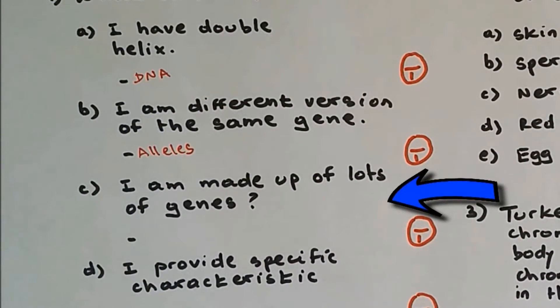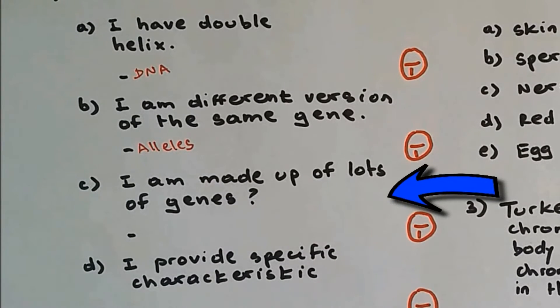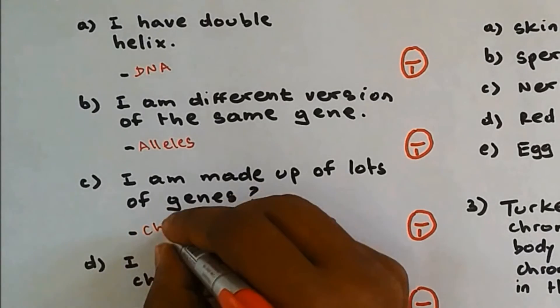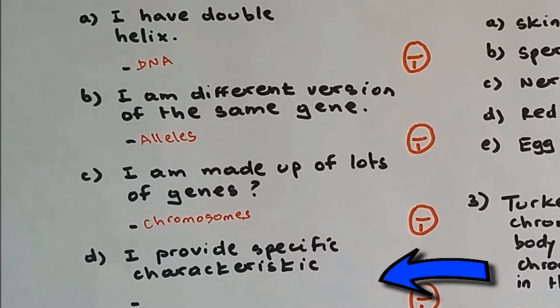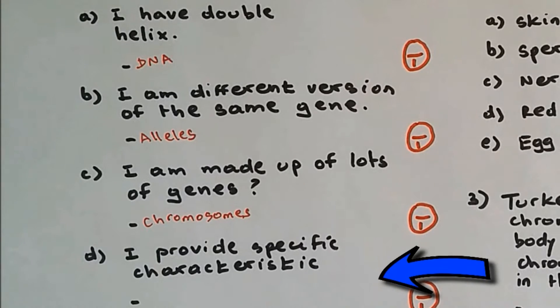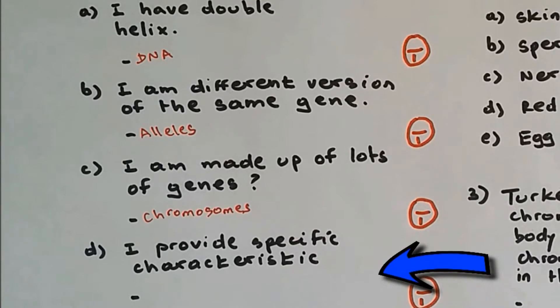Part C: I am made up of lots of genes. A group of genes make up a chromosome, so the answer for part C is chromosome. Question D: I provide specific characteristics. The parts which provide specific characteristics on chromosomes are genes.